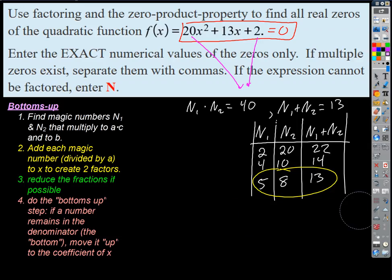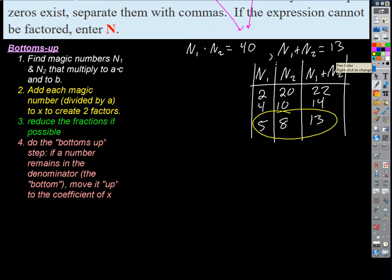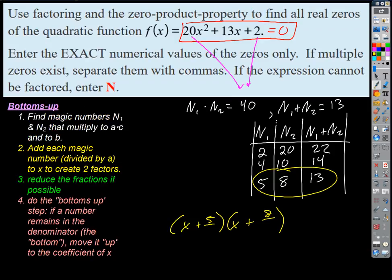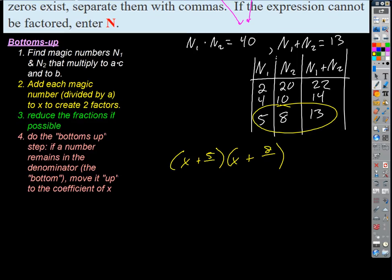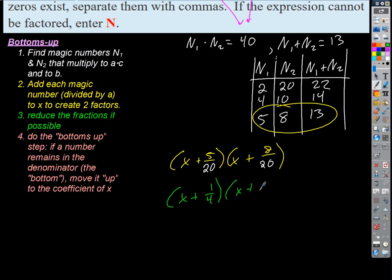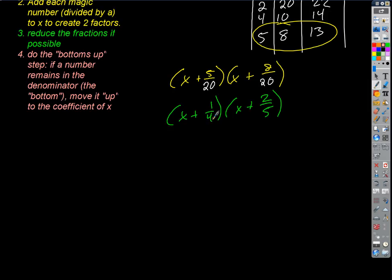So I set up the template: (x + 5)(x + 8), and divide each magic number by A = 20. So (x + 5/20)(x + 8/20). Reduce fractions: 5/20 = 1/4 giving (x + 1/4), and 8/20 = 2/5 giving (x + 2/5). Bottoms up: (x + 1/4) becomes (4x + 1) and (x + 2/5) becomes (5x + 2). So the factored form is (4x + 1)(5x + 2).